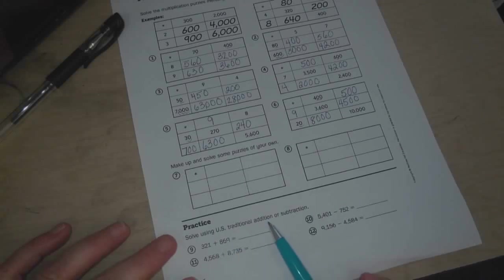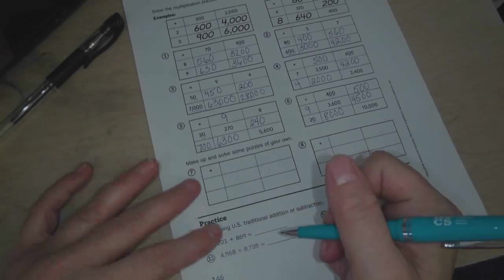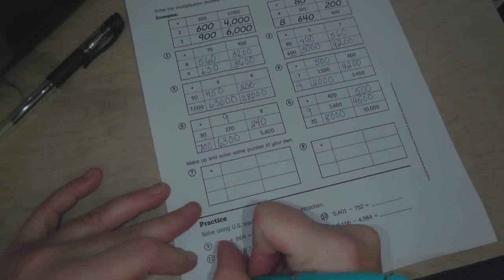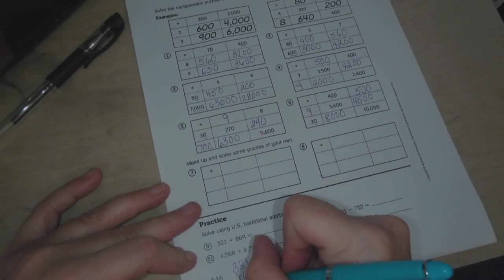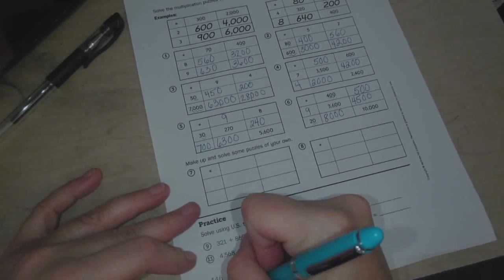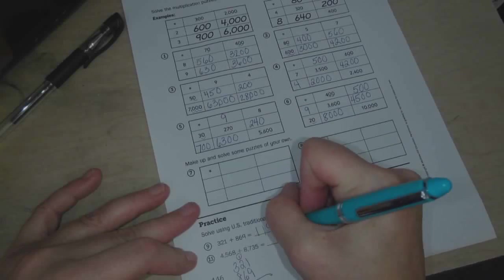And then solve using the U.S. traditional addition or subtraction. So number 9 is 321 plus 869. 9 plus 1 is 10. 6, 7, 8, 9. And 8 plus 3 is 11. So that's 1,190.